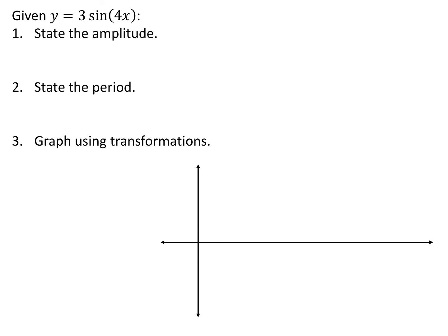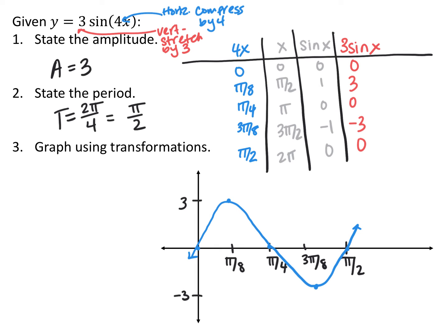For the function y equals 3 sine of 4x, we want to find the amplitude, the period, and graph using transformations. For the amplitude, it's the absolute value of whatever is multiplied in front — the vertical stretch or compression. Originally sine goes from negative 1 to 1, so stretching gives us a new amplitude of 3. For the period, because we're being horizontally compressed by 4, our period is normally 2 pi but shortened by a factor of 4. So our new period is 2 pi divided by 4, or pi over 2. For the table, I started with the parent function, multiplied all y-coordinates by 3, and divided all x-coordinates by 4.